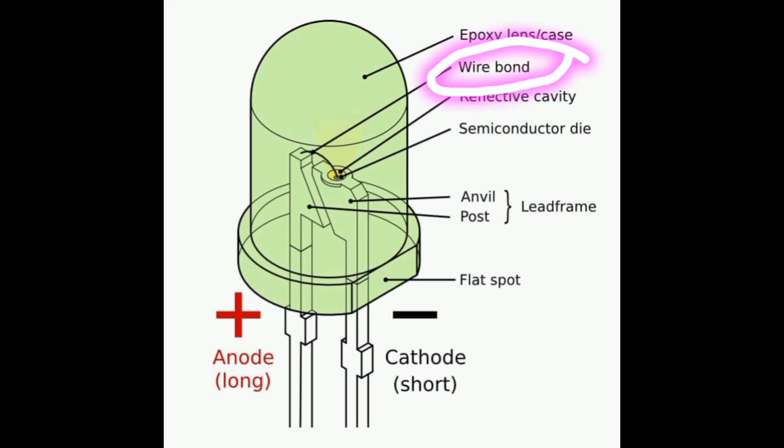Another part is wire bond. It provides the electrical connection for the LED to function. This one is reflection cavity. It's designed to enhance the efficiency of light extraction from the LED. It reflects photons that would otherwise be trapped inside the LED back towards the emitting surface, increasing the overall light output.